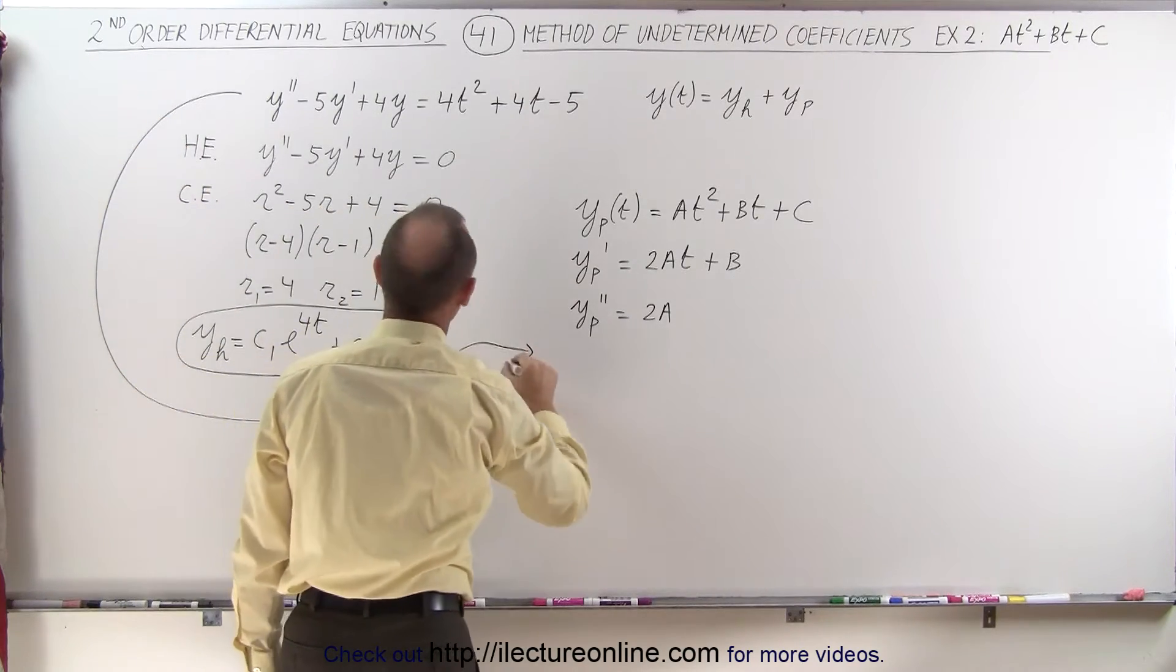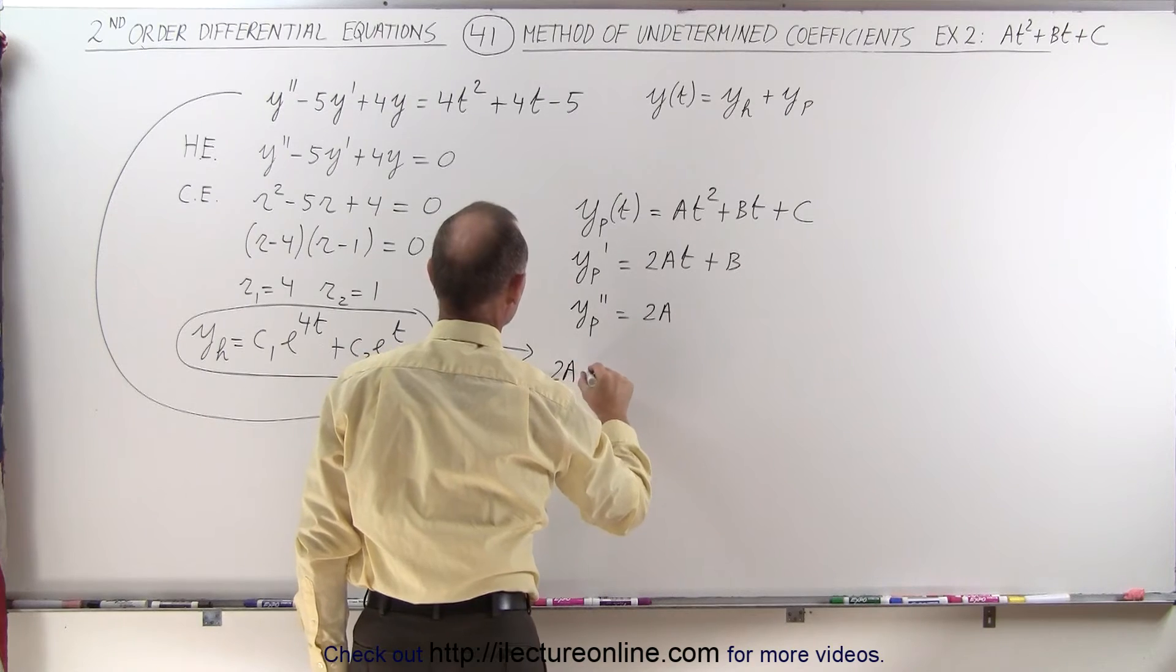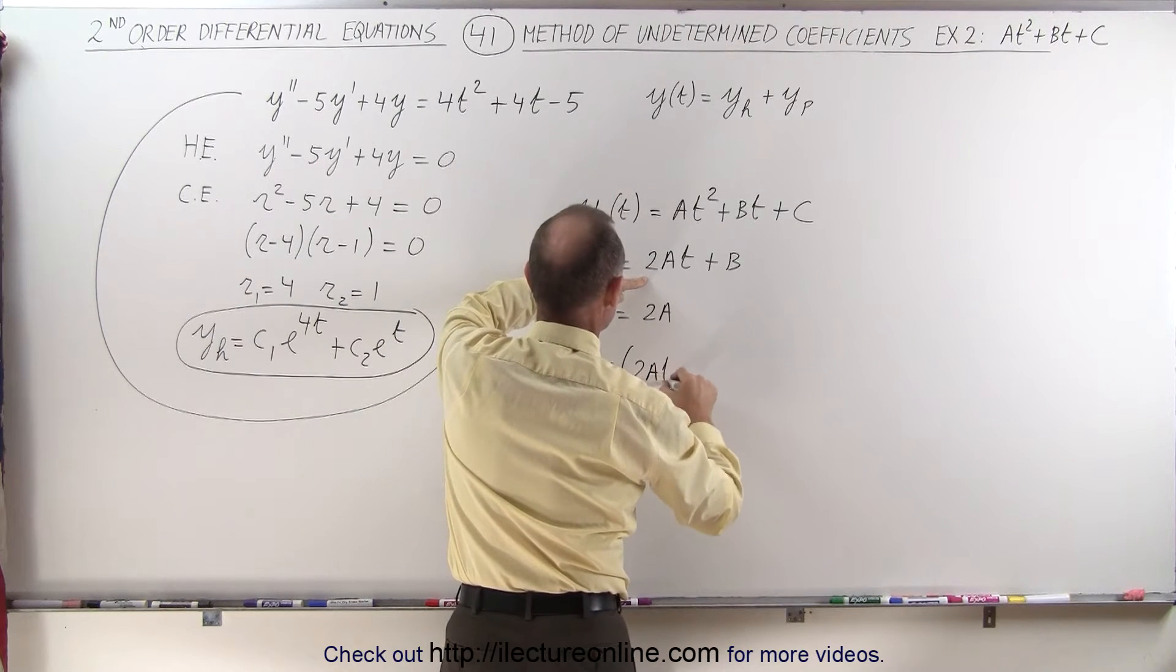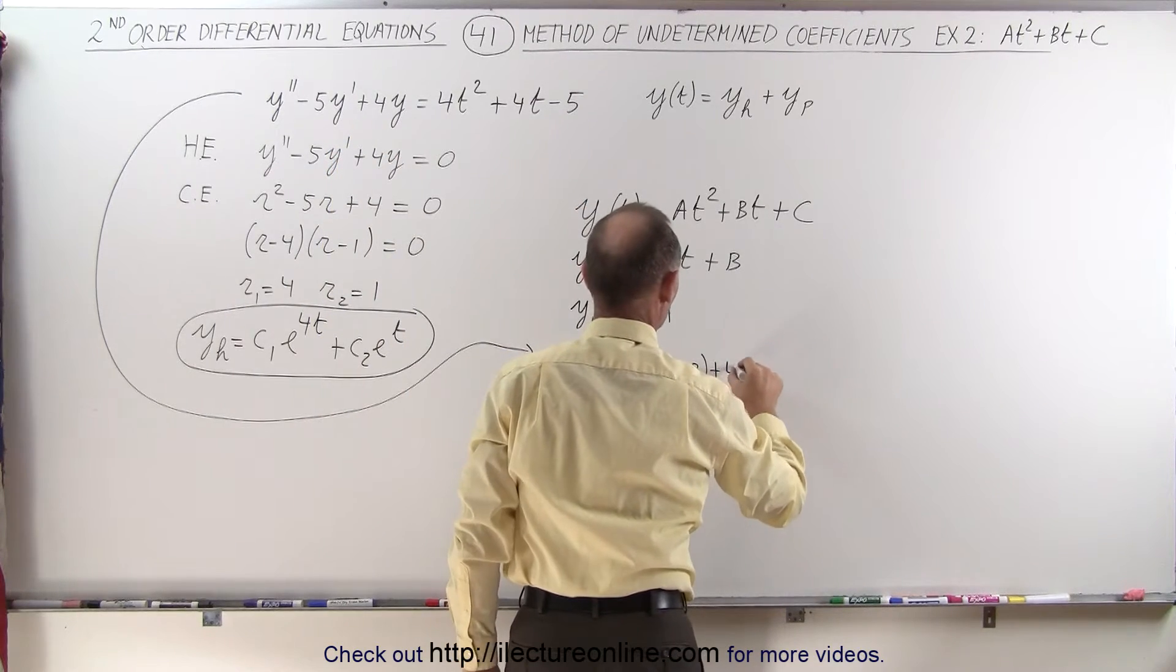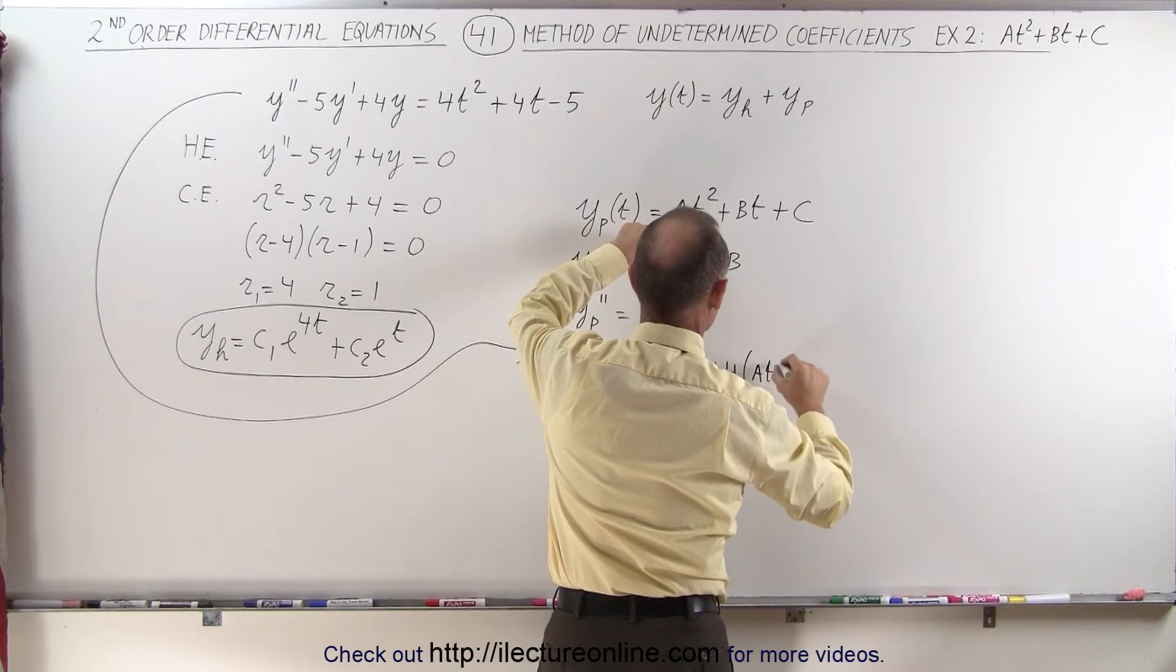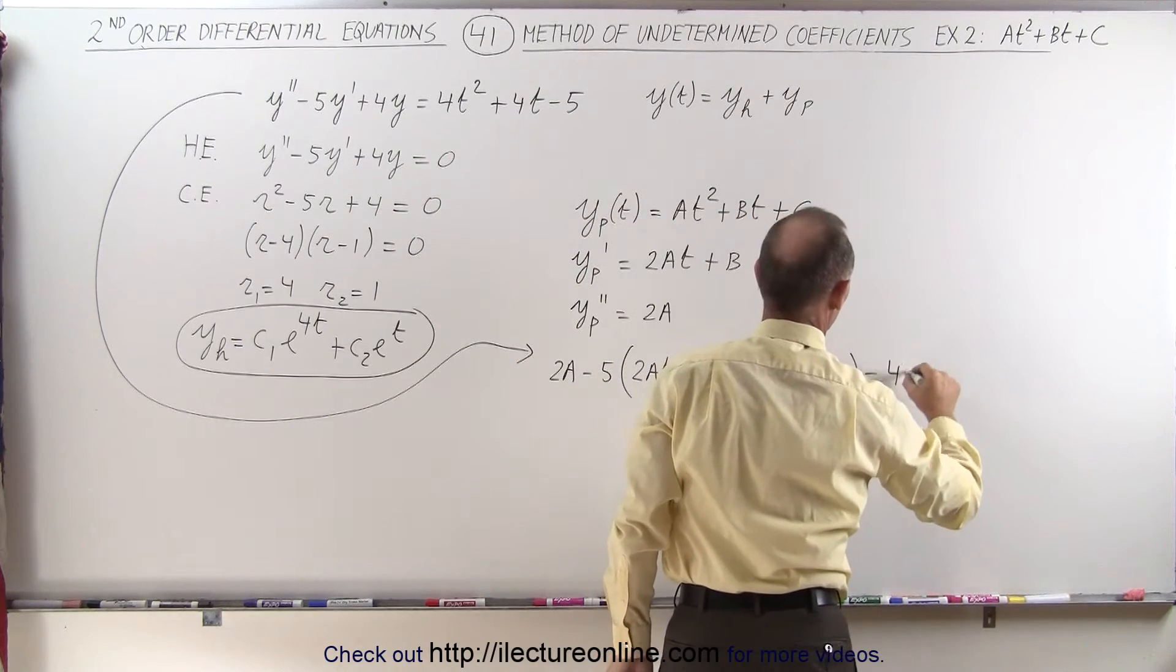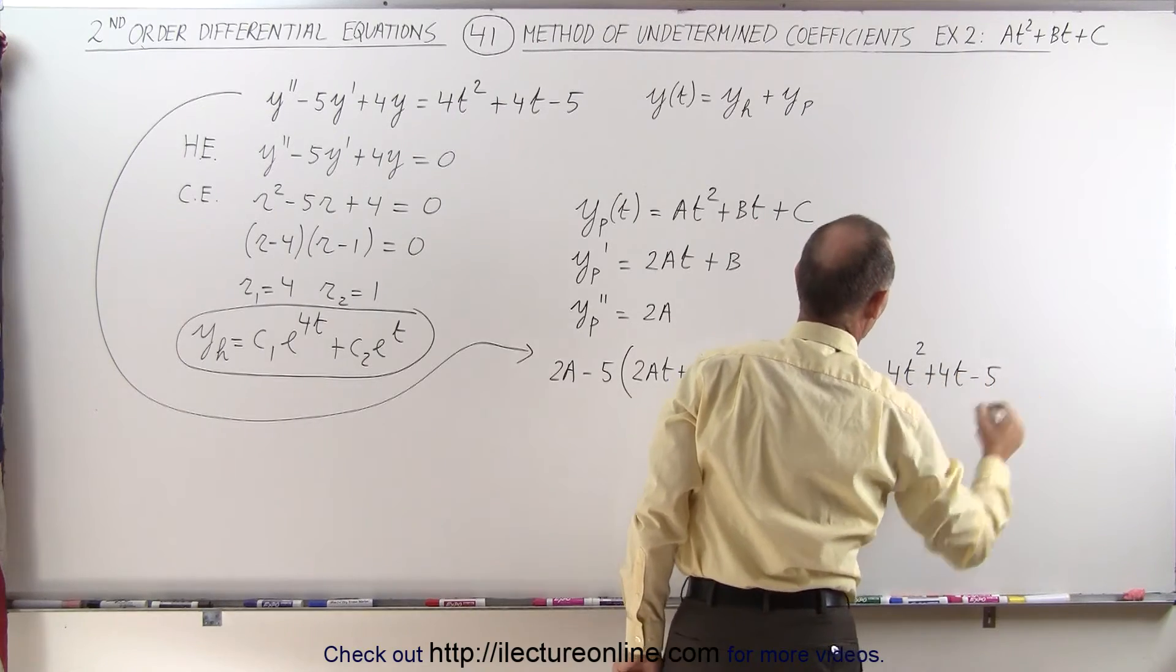We come over here and y double prime is equal to 2a minus 5 times y prime and y prime is right here. That would be 2at plus b. Then we have plus 4 times y, which is right here, at squared plus bt plus c and that should equal the right side equation, which is 4t squared plus 4t minus 5.